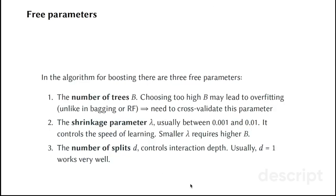There are, in general, three free parameters in the boosting algorithm. The number of trees. Here, you should be careful. Choosing too high B may lead to overfitting. Boosting too many trees may result in overfitting. We need to cross-validate this parameter. There is this shrinkage parameter lambda, which is usually set between 0.1% to 1%. It controls the speed of learning, and smaller lambda requires usually higher B. So, you can play with your boosting model by putting higher B and very low lambda, or putting higher learning parameter and lower number of trees.